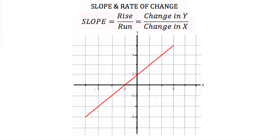Now let's talk about slope. Slope and rate of change are almost exactly the same thing. The change in y over the change in x is our slope. If you remember, y is usually our dependent variable and x is usually our independent variable. So really, there's nothing different about this formula than there was in the rate of change formula.